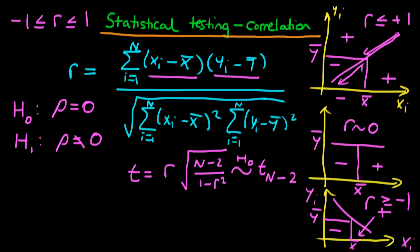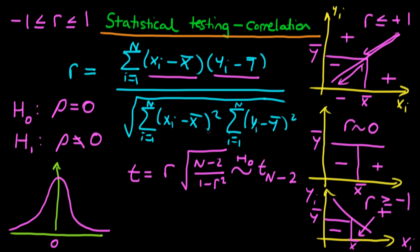If we were to draw a t-distribution with some degrees of freedom, it's centred around 0, and we could mark on our graph the 95% confidence interval critical values, which are somewhere around plus and minus 1.6 — though I can't remember the exact values; this is indicative.